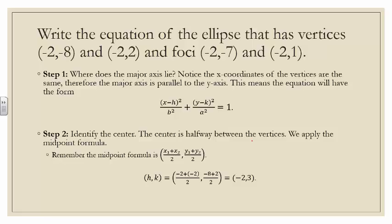Moving on to an example: write the equation of an ellipse that has vertices negative 2 comma negative 8 and negative 2 comma 2, and foci negative 2 comma negative 7 and negative 2 comma 1. Step 1: where does the major axis lie? Notice the x-coordinates of the vertices are the same — negative 2 in both cases. Therefore, the major axis is parallel to the y-axis. This means the equation will have the form x minus h squared over b squared plus y minus k squared over a squared equals 1.